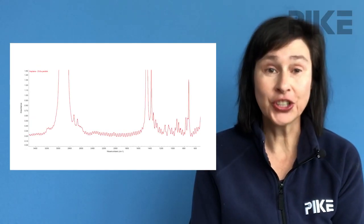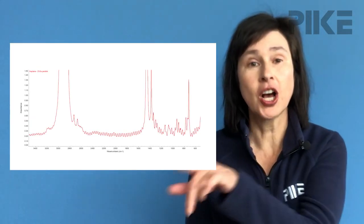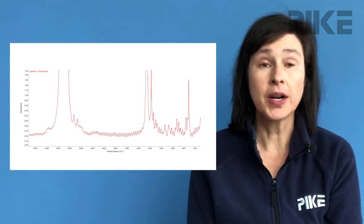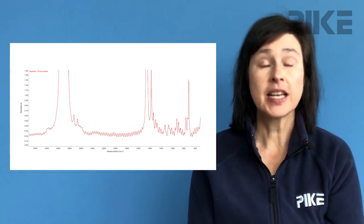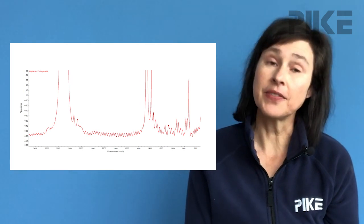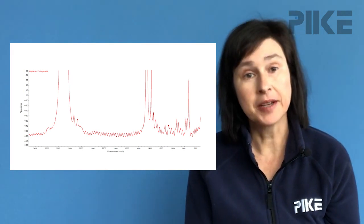One of the first things you'll notice is this fringing pattern all along the baseline, and this is common for transmission cells with a window that has a higher refractive index, such as zinc selenide or germanium, because the beam will come through and ricochet between the two parallel surfaces of the windows.